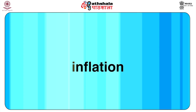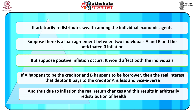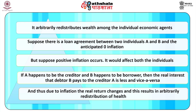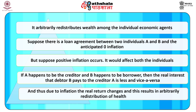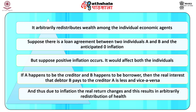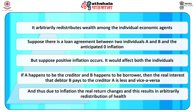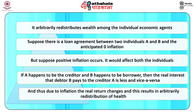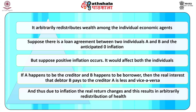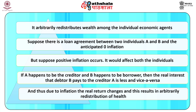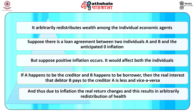Next is the cost of unexpected inflation. Unexpected inflation imposes more social cost to the society than expected inflation. First, it arbitrarily redistributes wealth among individual economic agents. Suppose there is a loan agreement between two individuals A and B with anticipated zero inflation, but positive inflation occurs. If A is the creditor and B is the borrower, then the real interest that debtor B pays to creditor A is less. Thus, due to inflation, the real return changes and this results in arbitrary redistribution of wealth.